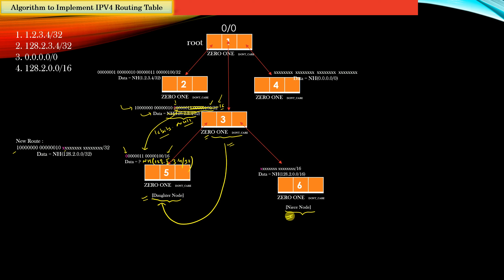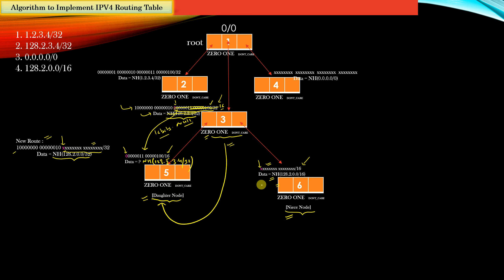The second node is the niece node, which is a simpler case. The niece node borrows its effective prefix bits from the effective prefix bits of the new route. From the point where the mismatch happened, we copy the prefix bits of the new route as the prefix bits of the niece node. Since we are copying 16 bits, the prefix length of the niece node is 16. The data part of the new route is copied as the data part of the niece node, and all children of the niece node point to null. The niece node is made a don't care child of its parent because the first bit of this niece node is a don't care. This is the procedure of splitting a node.